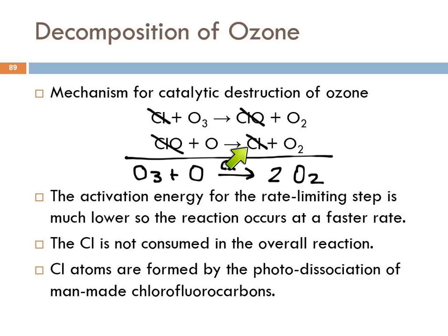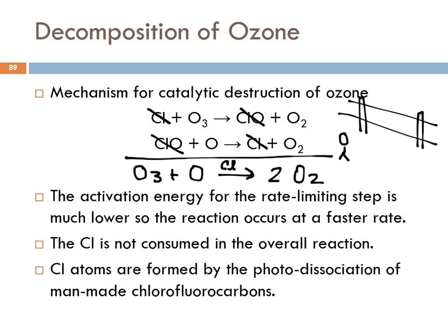The chlorine that gets reproduced just goes on and reacts with another ozone molecule. Here's an analogy for a catalyst: here's a fence, and here we have some kindergartners who need to get over the fence. Because they're small and the fence is kind of big, it takes them a while to climb over—there's an activation energy, a barrier they have to get over before they can continue on to the playground.